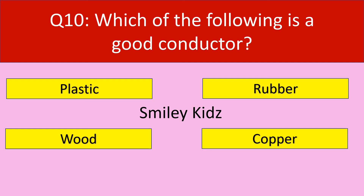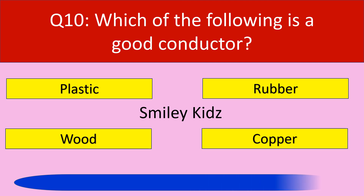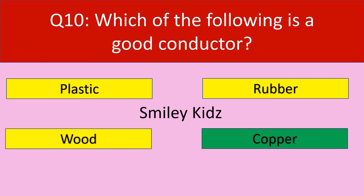Question number ten. Which of the following is a good conductor? Options are plastic, rubber, wood, and copper. Your time starts now. Your time is up. The correct answer is copper. Copper is a good conductor.